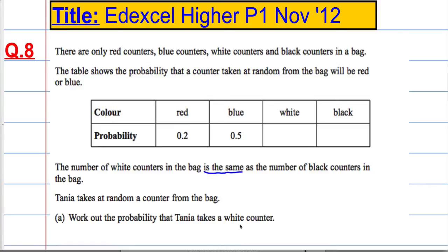Work out the probability that Tanya takes a white counter. Now, we have to remember that the total probability of taking a counter would be 1. So if I add up all these probabilities, the total would be equal to 1.